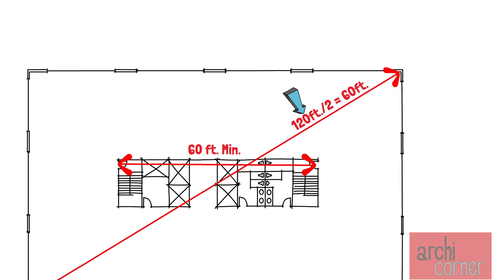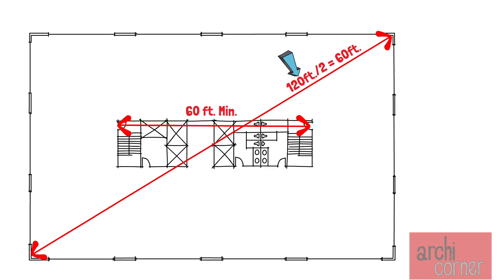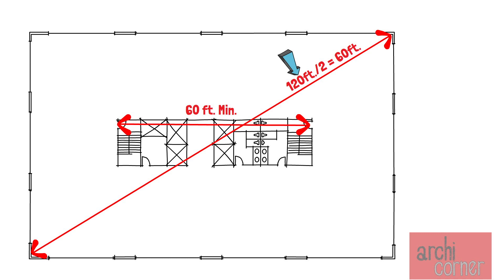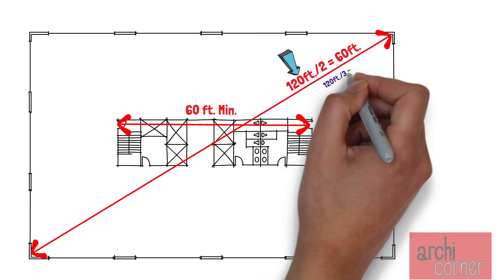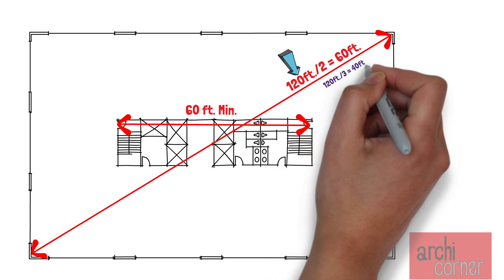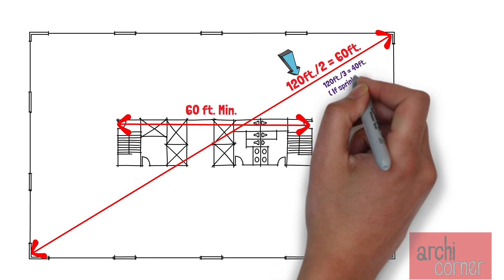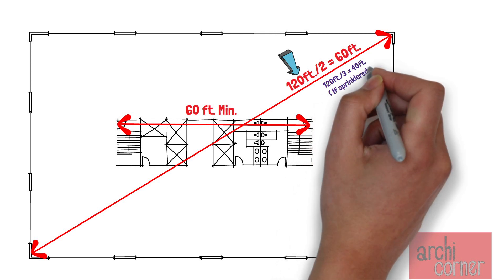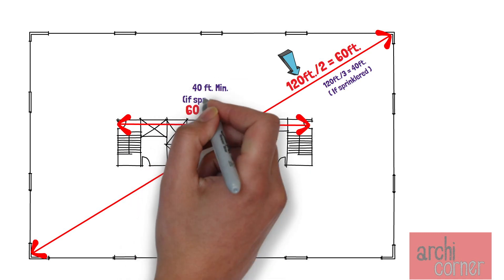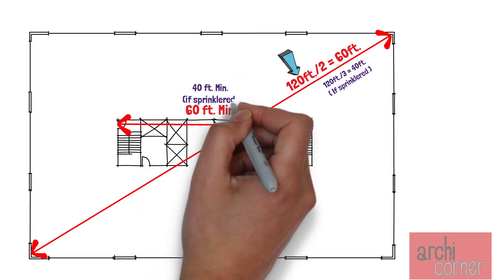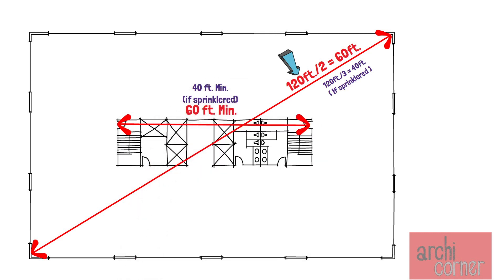Back to our example — if we have a sprinkler system, we can divide 120 feet by three to get a third, which equals 40 feet. Therefore, the distance between our stairwell doors must be a minimum of 40 feet if the building is sprinklered.